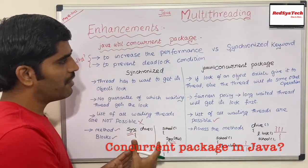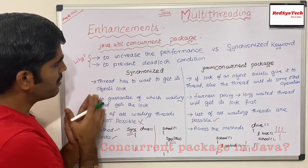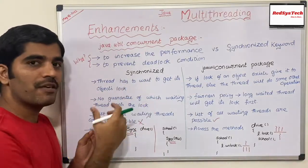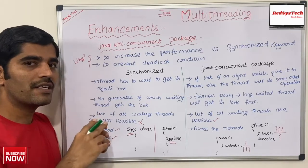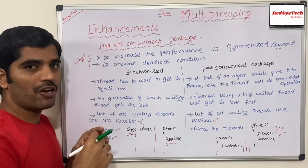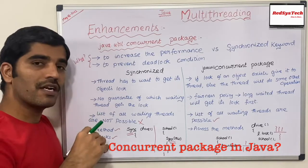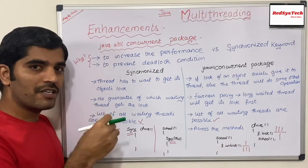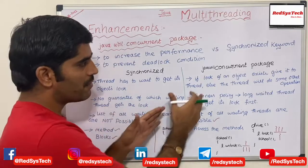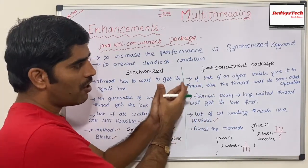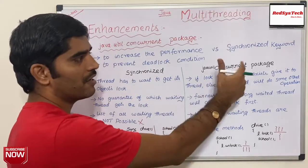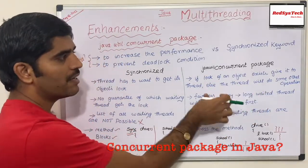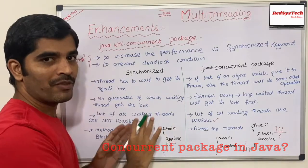Let me list out the differences between using the synchronized keyword versus the concurrent package. With the synchronized keyword, a thread has to wait to get the object lock. Whatever code is inside the synchronized block — whether at the method level or block level — can only be executed by one thread. But in case of the concurrent package, if the lock of an object exists, give it to the thread; otherwise the thread can do some remaining or different operation, improving performance by not waiting for an object's lock for a long time.